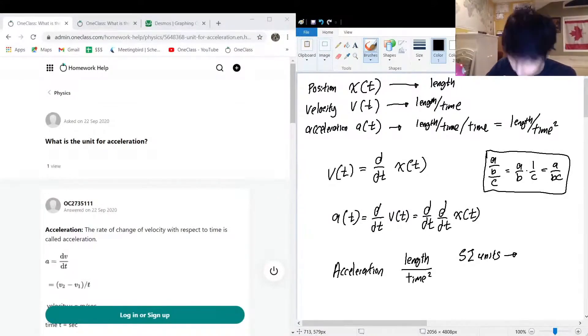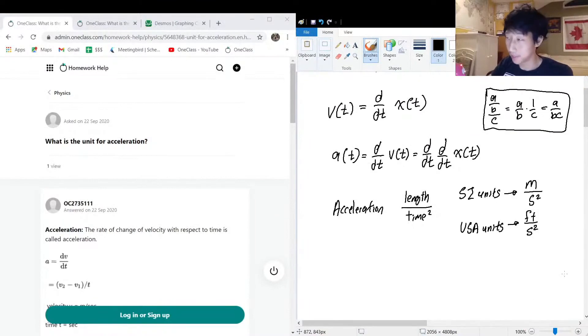So if we use SI units, the length is measured in meters, so m per second squared. If we use USA units, we might have feet per second squared. I guess it's a good thing that we use the same time units all across the world. I'm very glad that we are not using different time units - I don't need to do a unit conversion for time, that would be uncomfortable. But these are just some examples.